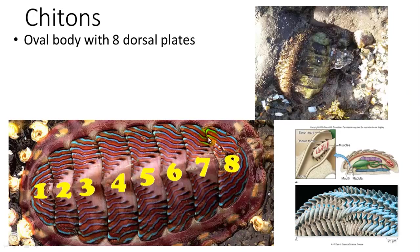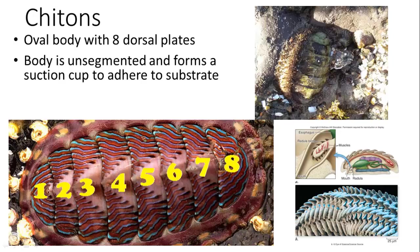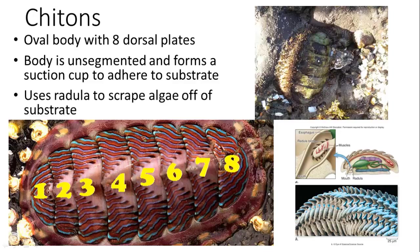Chitons have an oval body with eight dorsal plates; the body is unsegmented but has segmented plates. They use one large foot like a suction cup to stick to substrate and can be found on rocky beaches. They also have a radula for grazing algae.